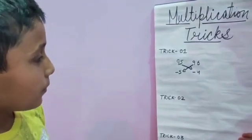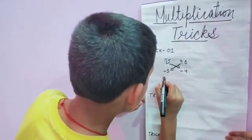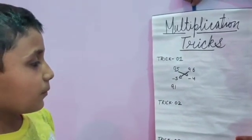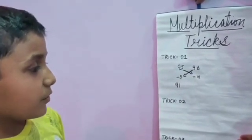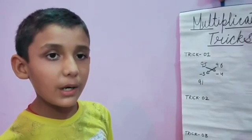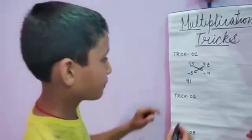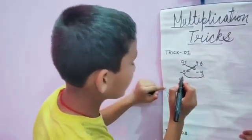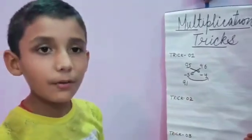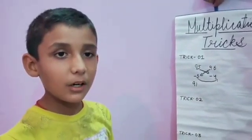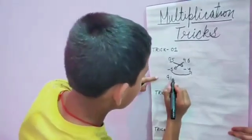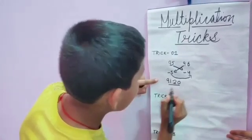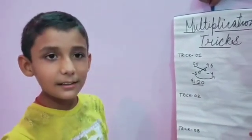So we write 91 here. Now we multiply both lower digits: 5 multiplied by 4 is equal to 20. We write 20 here. So our answer is 9120.